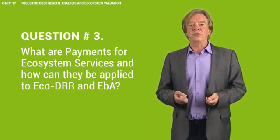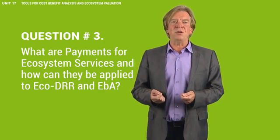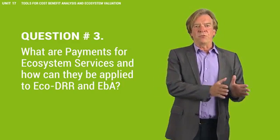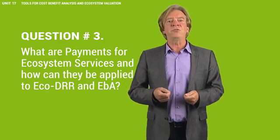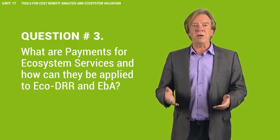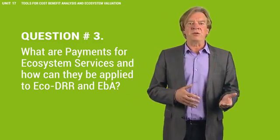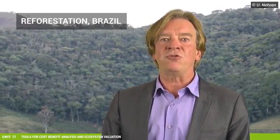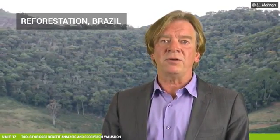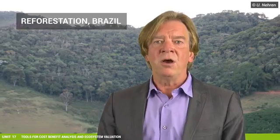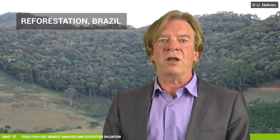Payments for ecosystem services, or PES, is an incentive-based mechanism that utilises financial transactions between providers and beneficiaries of ecosystem services. The basic idea is that landowners and farmers receive payments to manage their land properly and avoid costs related to unsustainable land use, such as water contamination. How does PES relate to disaster risk reduction and climate change adaptation? These issues are usually not directly addressed in PES schemes. However, measures such as reforestation and forest management that aim at carbon sequestration, watershed protection, and biodiversity conservation often also contribute to disaster risk reduction and climate change adaptation.